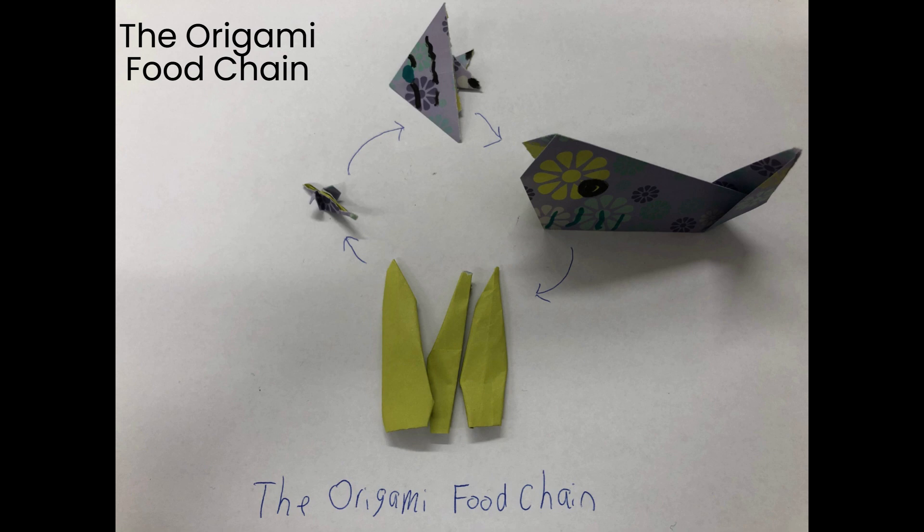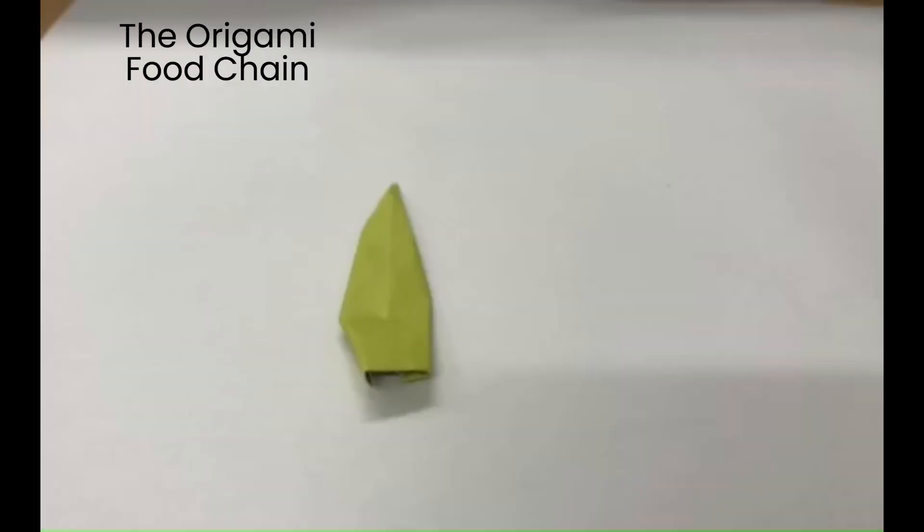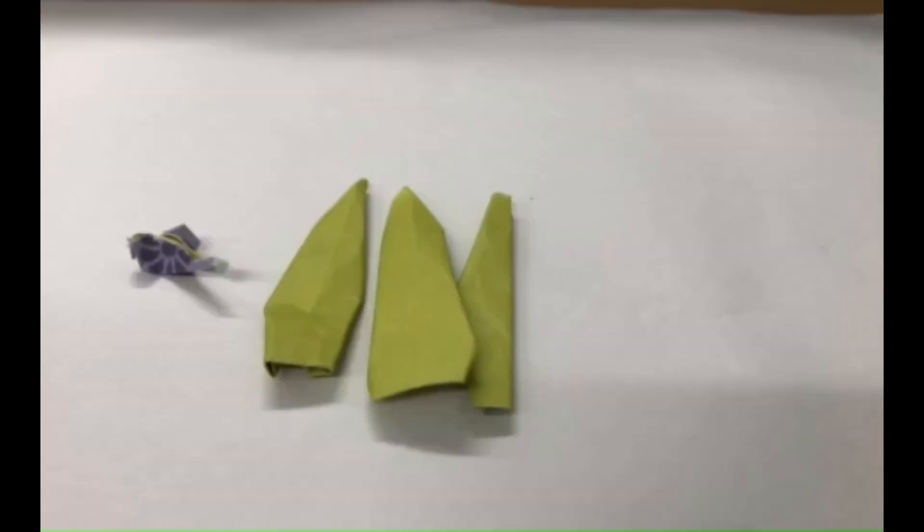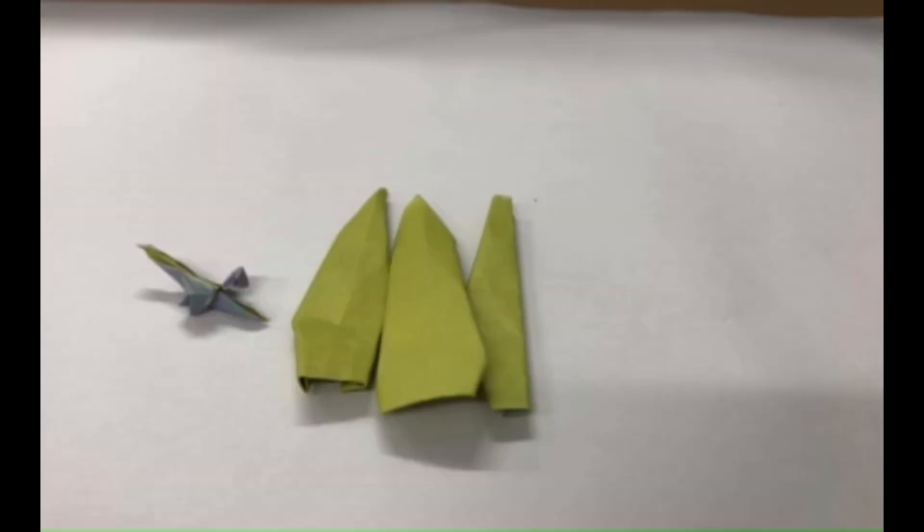Let's learn about the origami food chain. This is origami coral. They are producers. Plankton use these for food.